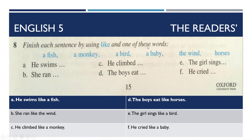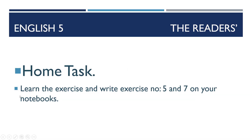Next, finish each sentence by using 'like' and one of these words. You have to complete the sentence. First: 'He swims like a fish.' Next: 'She ran like the wind.' Next: 'He climbed like a monkey.' Next: 'The boys eat like horses.' Next: 'The girl sings like a bird.' Next: 'He cried like a baby.' So that's all about today's tasks.